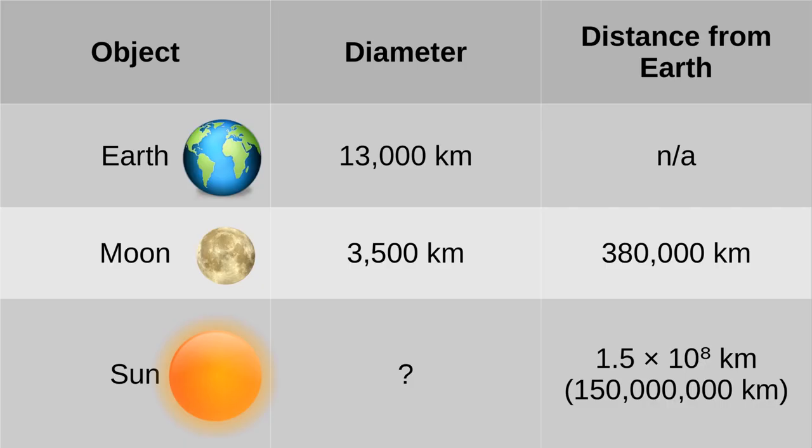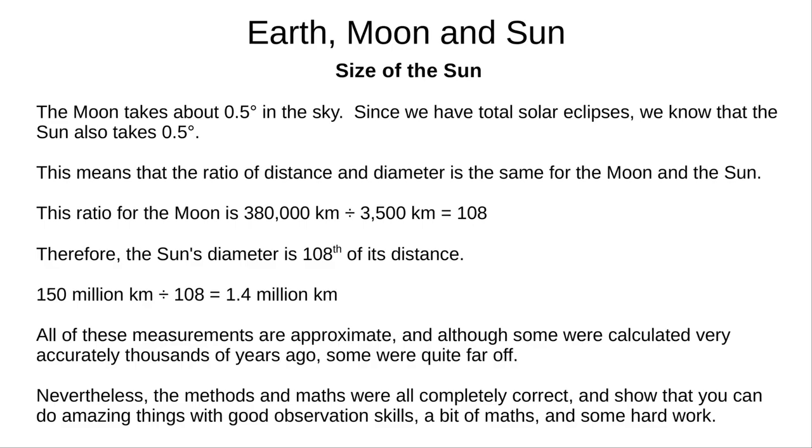Now we've almost finished our table. And the next one's an easy one. Through a happy coincidence, the moon and the sun take up the same angular size in our sky.